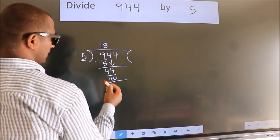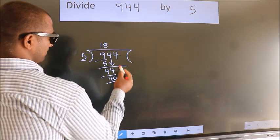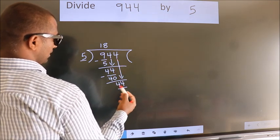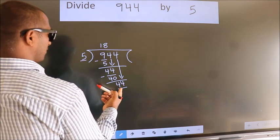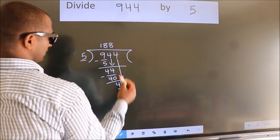Now we subtract. We get 4. After this, bring down the beside number. So 4 down. So 44. A number close to 44 in 5 table is 5 times 8 is 40.